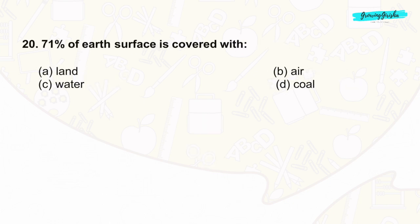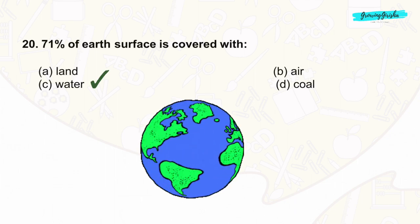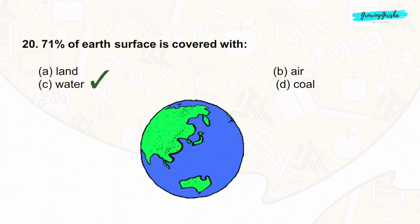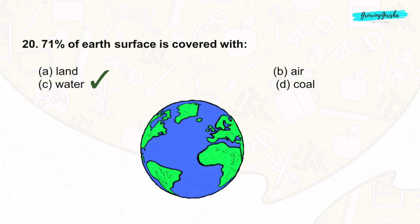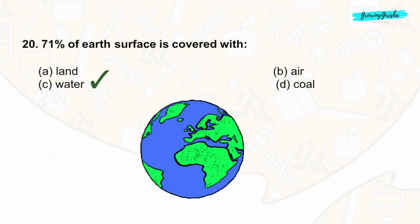Question 20: 71% of the earth's surface is covered with water. The remaining 29% is covered with land. The correct answer is option C: water.